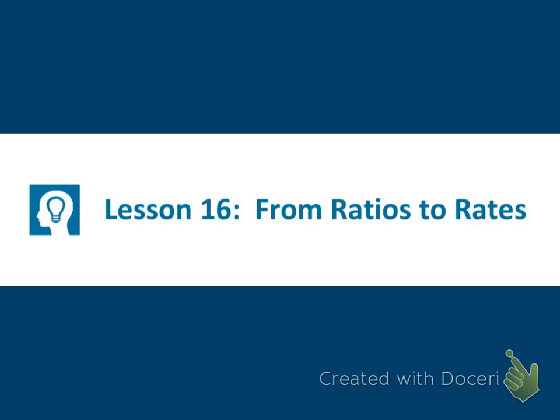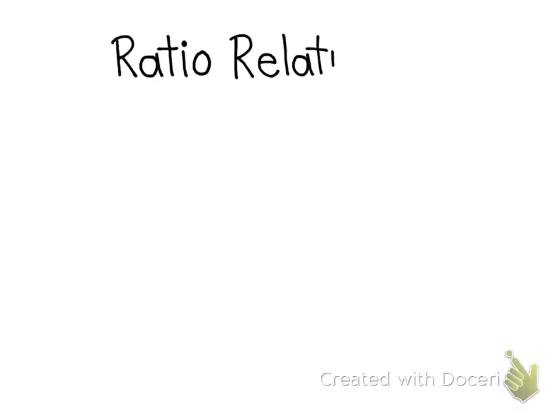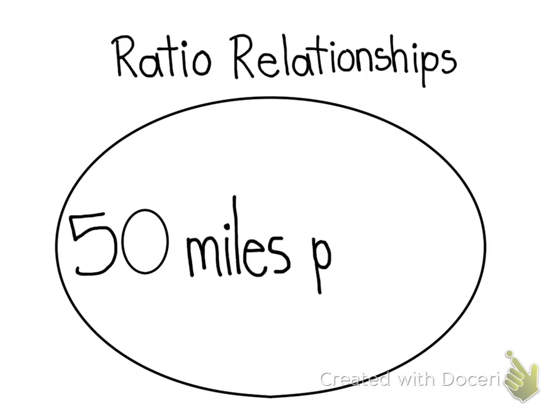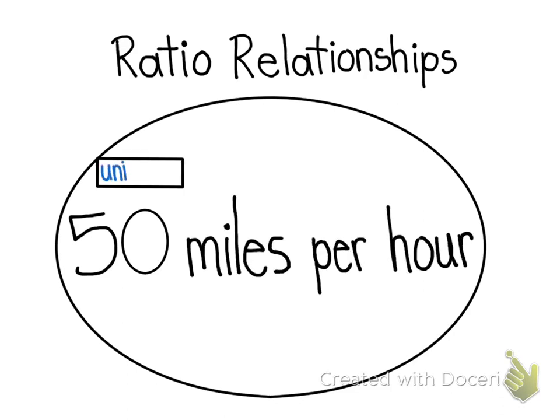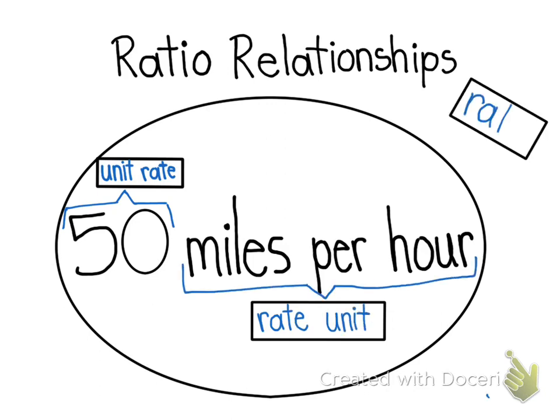So we have been working on ratios — what are ratios, equivalent ratios — and now we're focusing on moving from ratios to rates. Before we get started with the lesson, I want you to look at what a ratio relationship is. For example, I have 50 miles per hour. 50 miles per hour is the rate. My unit rate is 50, because it's the value of the ratio, and my rate unit is miles per hour.